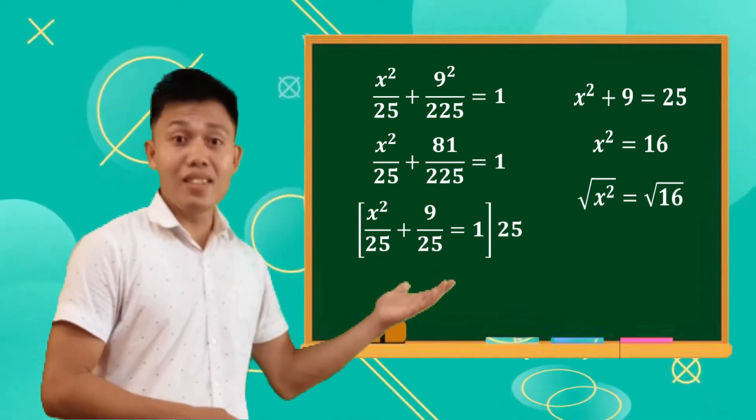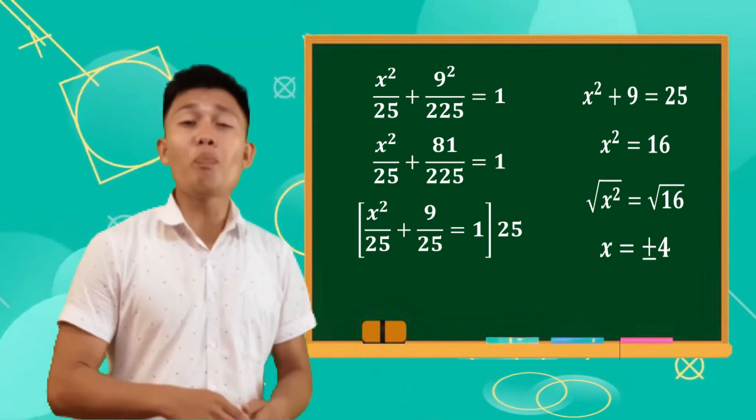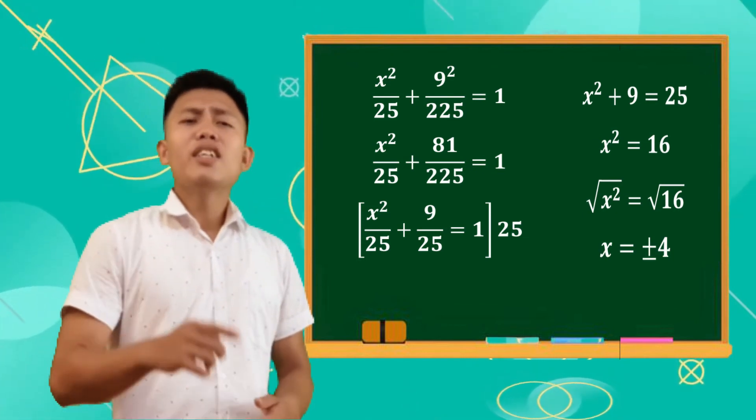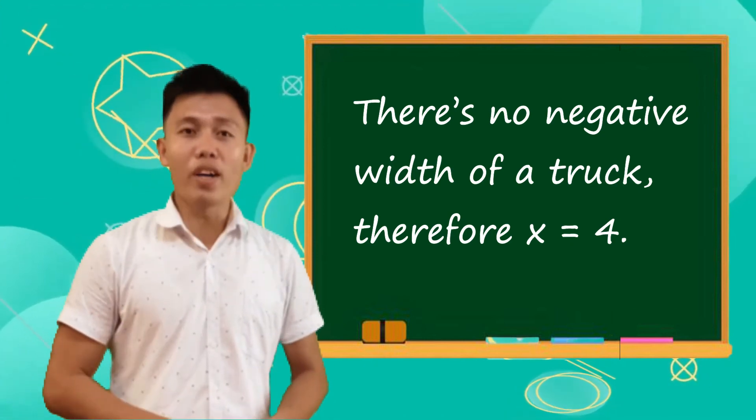Square root both sides, we get the value of x, it will become x equals positive and negative 4. Since there is no negative width of the truck, therefore x equals 4.